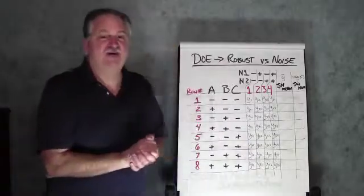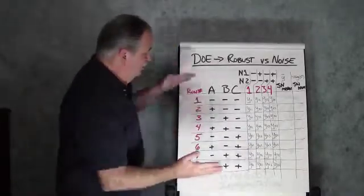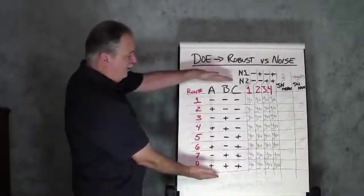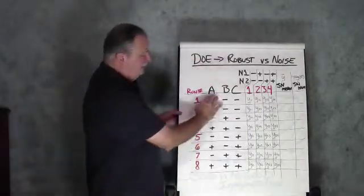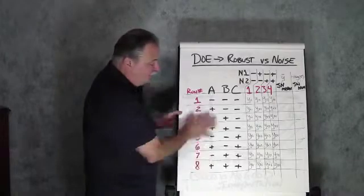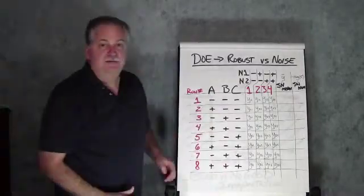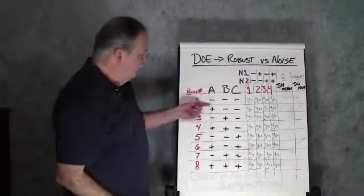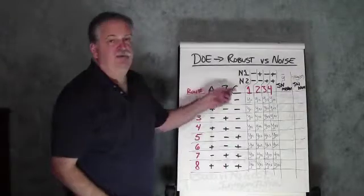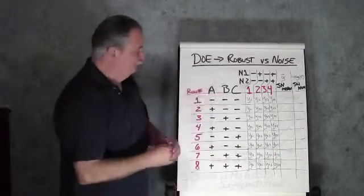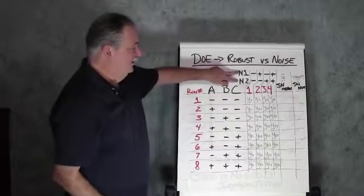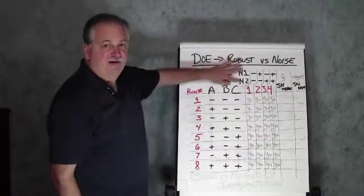And I know this looks a little complicated, but this is how we actually do this. Let's say that we have our design of experiments that we're going to conduct. And this is a three factor, full factorial, eight experimental conditions. Alright, two level settings, a low and a high for factors A, B, and C.